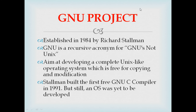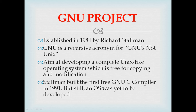The GNU project was established in 1984 by Richard Stallman. GNU is a recursive acronym standing for 'GNU's Not UNIX.' The aim was to develop a complete UNIX-like operating system which is free for copying and modification. Stallman and his team built the first free GNU compiler in 1991, but an operating system was yet to be developed, as an OS is in itself a bigger undertaking.